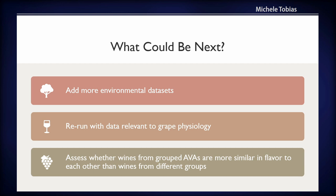Another thing that would be really interesting would be to assess whether the groups that came out of this analysis actually correspond to wines that have a similar flavor profile — relating to the concept of terroir. It might be interesting to have somebody adept at tasting wine take wines from these different groups and see if they are actually similar. If anyone's interested in doing that, let me know — or if you're familiar with wines from these regions, I'd be curious to hear if your personal experience suggests they're similar.